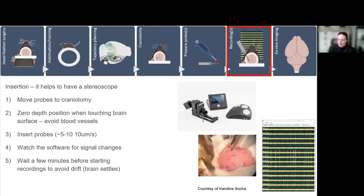You first zero the depth when you touch the probe. Please avoid any blood vessels because it's just better to avoid them. Once you can go in, you just insert the probes very slowly at a speed from 5 to 10 micrometers per second. You can know that you're in the brain by watching the signal. In this case, we use Spike GLX software, and you can just see that at some point the signal changes and you see spikes appearing, and that's how you know you're in the brain. If you're deep enough based on your trajectory planner, you have to wait a few minutes before starting the recording to allow the brain to settle.